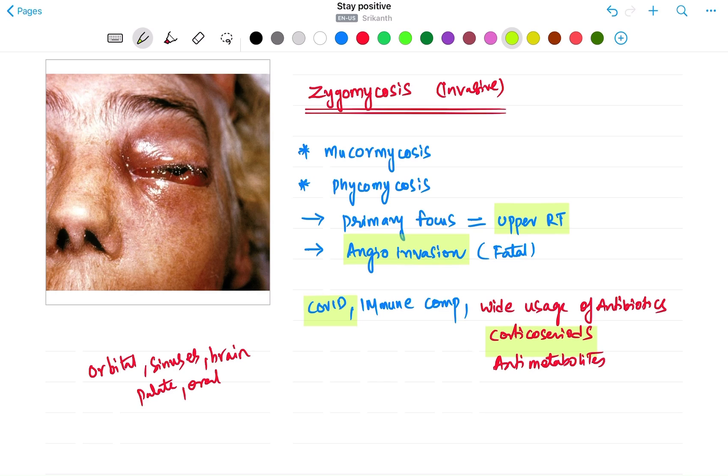So the case can be like this: A COVID-positive patient with use of antibiotics or corticosteroids, followed by something like an orbital cellulitis which you can see in the clinical photograph, or maybe an infection of the sinus, or maybe the perforation of the palate, or maybe the brain abscess in few of the cases.